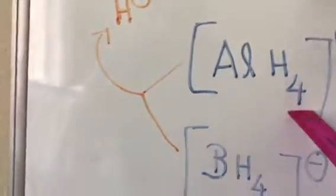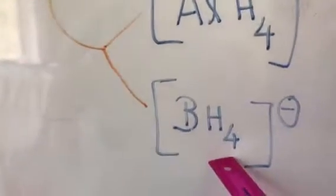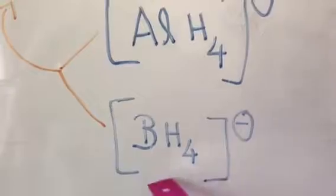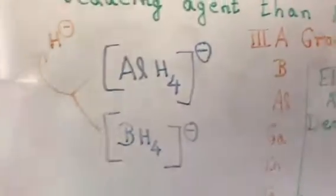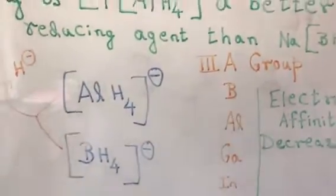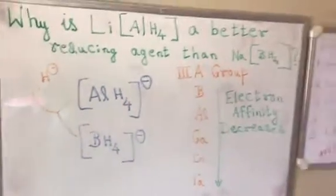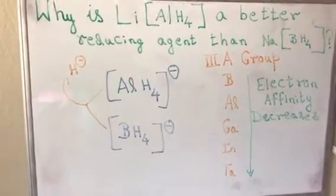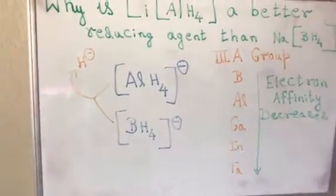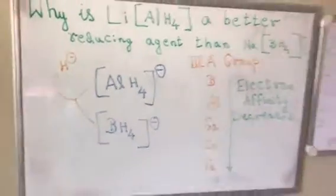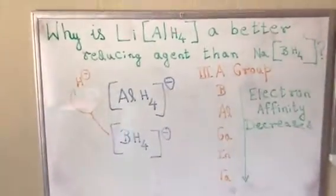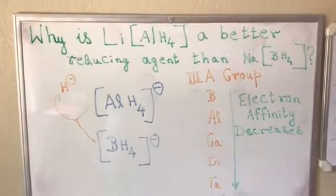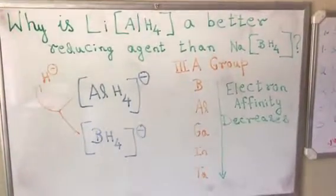That is why, owing to its reduced electron affinity, lithium aluminium hydride serves as a better reducing agent compared to sodium borohydride. The determining factor for the power of these two reducing agents is the electron affinity of the central atoms. Hope this clearly addressed your question — happy learning, thank you.